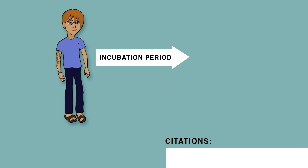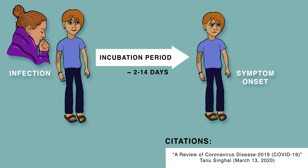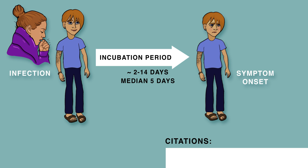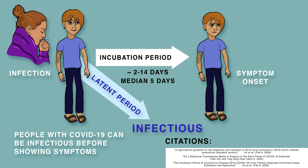The incubation period is the time between infection and symptom onset for an illness. Estimates for COVID-19's incubation period vary from 2-14 days, but it is generally assumed to be around 5 days. There is more debate about the latent period, which is the time between infection and infectiousness. It is now thought that people can be infectious before showing symptoms, and so the latent period is shorter than the incubation period.